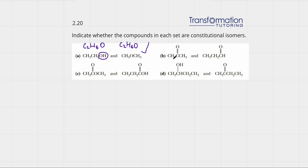Let's move on and take a look at B. The left molecule has three carbons, six hydrogens, and one oxygen. The right molecule also has three carbons, six hydrogens, and one oxygen. So the formula for the left and right compounds are the same.